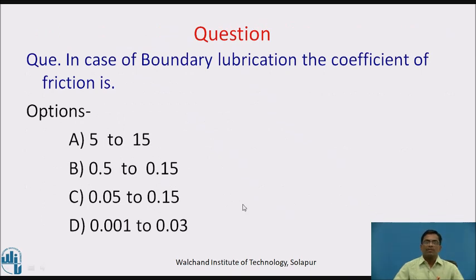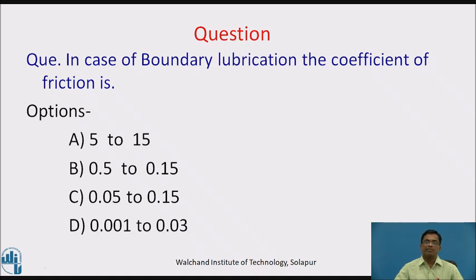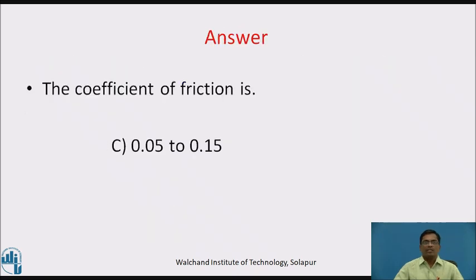Pause the video and answer this question: In the case of boundary lubrication, the coefficient of friction is — (a) 5 to 15, (b) 0.5 to 0.15, (c) 0.05 to 0.15, or (d) 0.001 to 0.03. Welcome back. The correct answer is option C: 0.05 to 0.15.